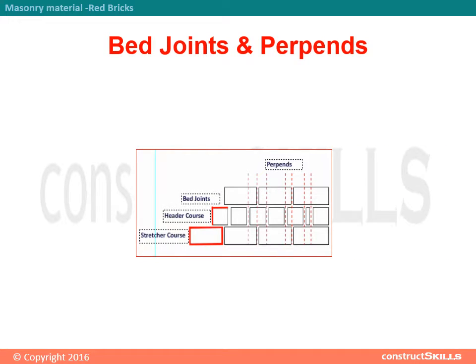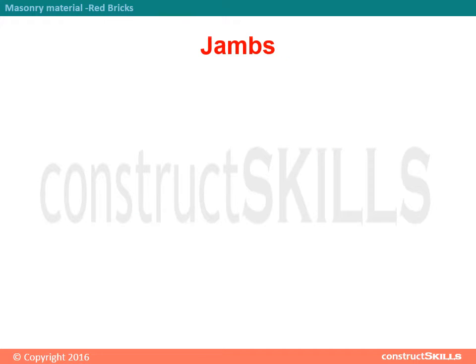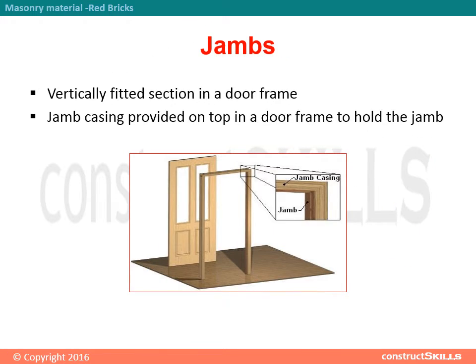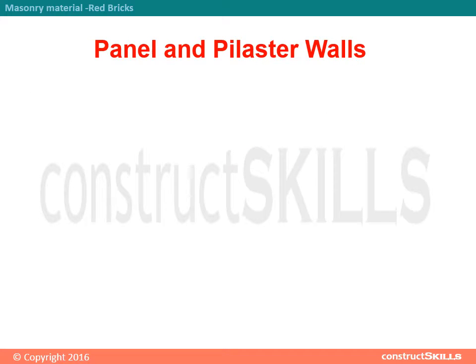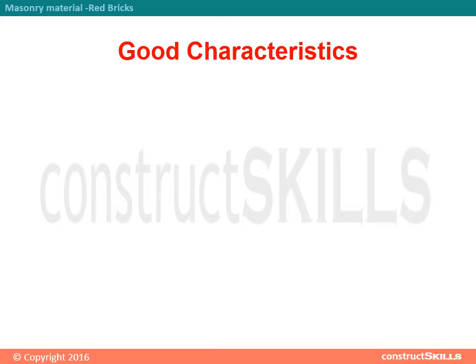Bed joints: these are the horizontal joints of brick or stone masonry. Jams: a vertically fitted section in a door frame. Casing: provided on top of a door frame to hold the jam. Panel and pilaster walls: walls consisting of pillars at regular intervals with a thin portion of wall to give transverse strength to a long boundary wall.